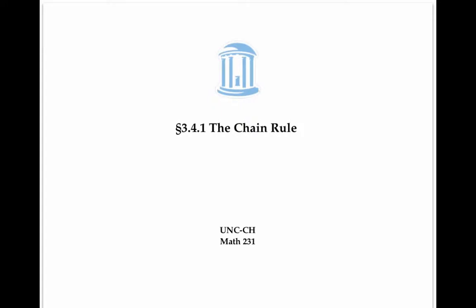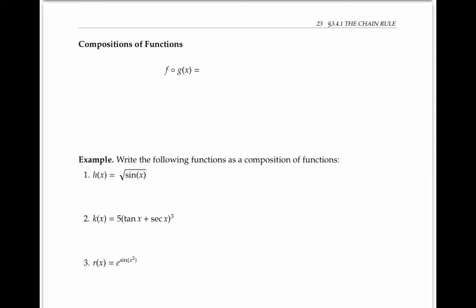The chain rule is a really useful rule for finding the derivative of the composition of two functions. Let's start with a brief review of composition. F composed with G means we apply F to the output of G.